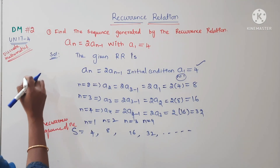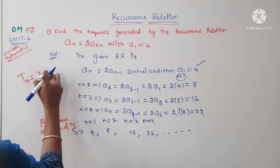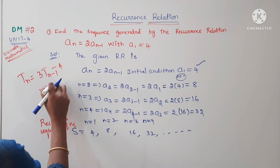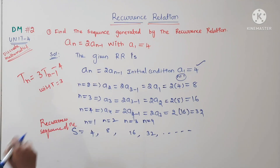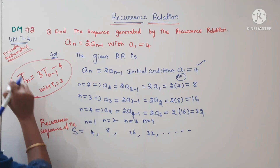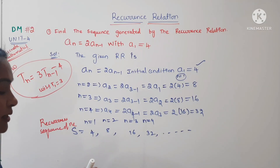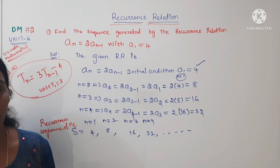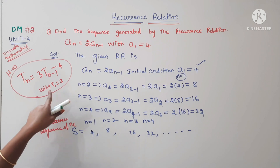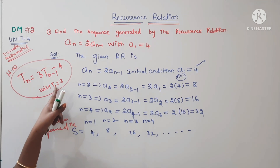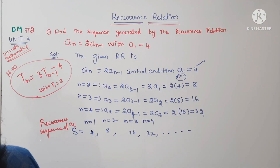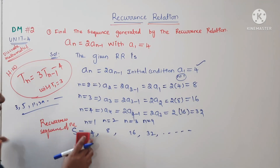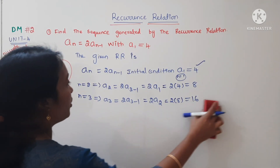The next problem is your homework: tₙ = 3tₙ₋₁ − 4, with initial condition t₁ = 3. You can solve it and comment the answer. The answer is 3, 5, 11, 29, and so on. Find it out and comment below.